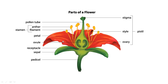Female reproductive organs are called gynoecium. So, andricium and gynoecium. In order from outside to inside: calyx, corolla, andricium, gynoecium. Remember this order, it will help you answer easily.